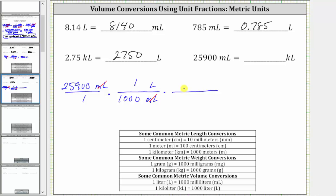For the second unit fraction, because we want liters to simplify out, we need to have liters in the denominator and kiloliters in the numerator. Using the conversion one kiloliter equals 1,000 liters, the unit fraction is one kiloliter over 1,000 liters. We have liters divided by liters — liters simplify out, leaving us with kiloliters.